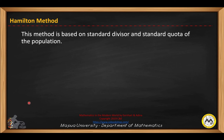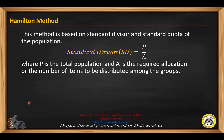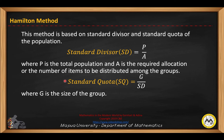The first method is known as Hamilton method, which is based on standard divisor and standard quota of the population. The standard divisor, SD, is equal to B over A, where B is the total population, and A is the required allocation or the number of items to be distributed among the groups or subsets of the population. The standard quota is equal to G over SD, so G is the size of the group.